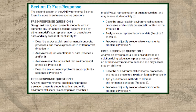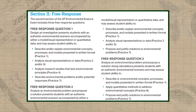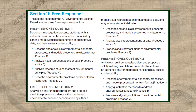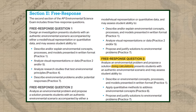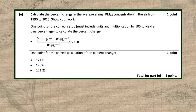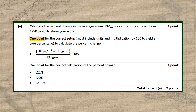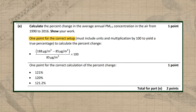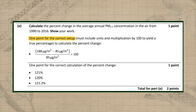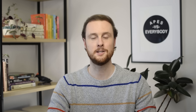In the FRQ section we have a bit more clarity. As stated in the CED and confirmed by the 2021 released FRQ sets, the math questions will appear on the third FRQ and should take the form of three different two-point questions. Each question will have one point for the correct setup with units and one point for the correct answer with units.